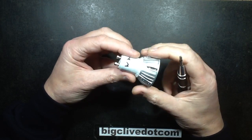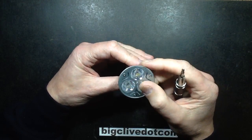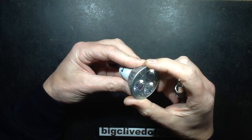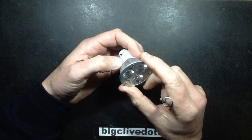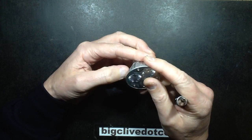Someone was asking if the new Poundland warm white version of the LED GU10 lamp is supposed to actually put out more lumens. Does it have a different power supply?